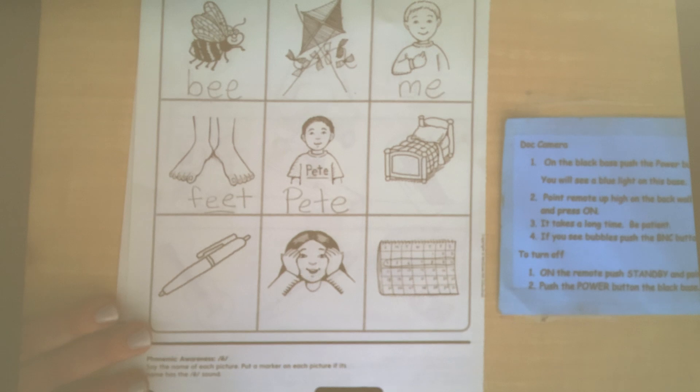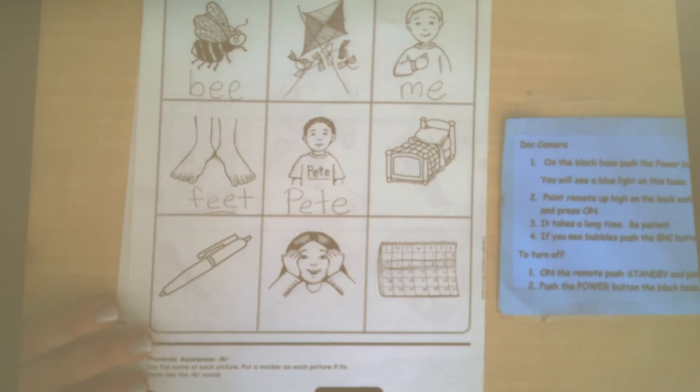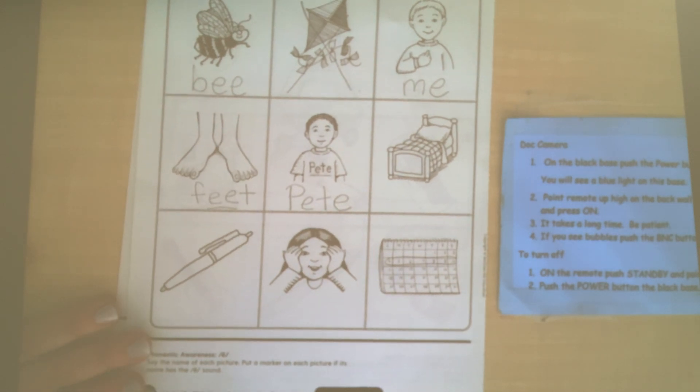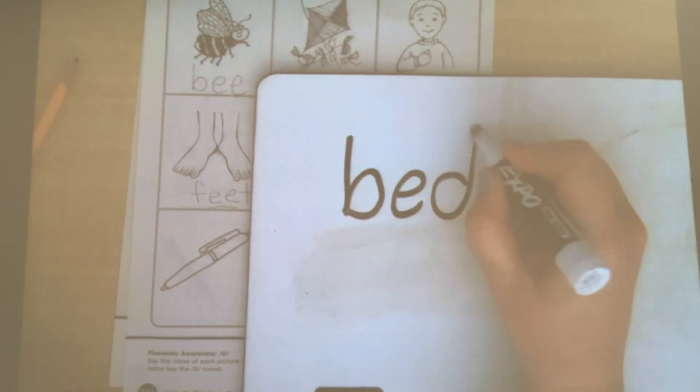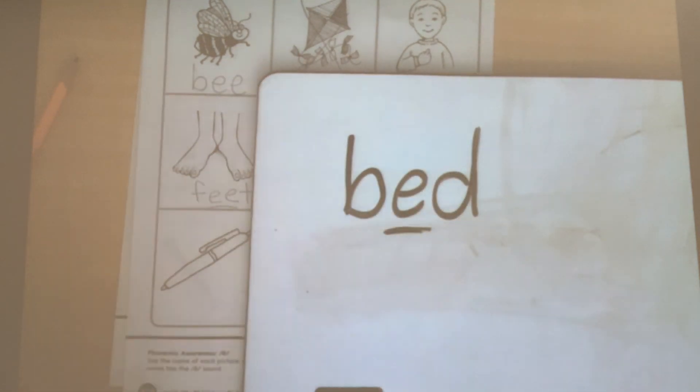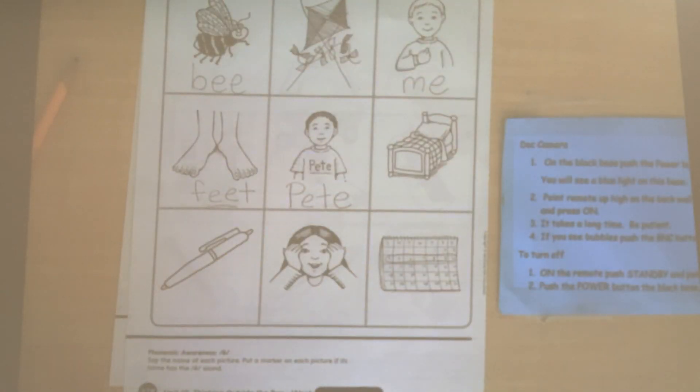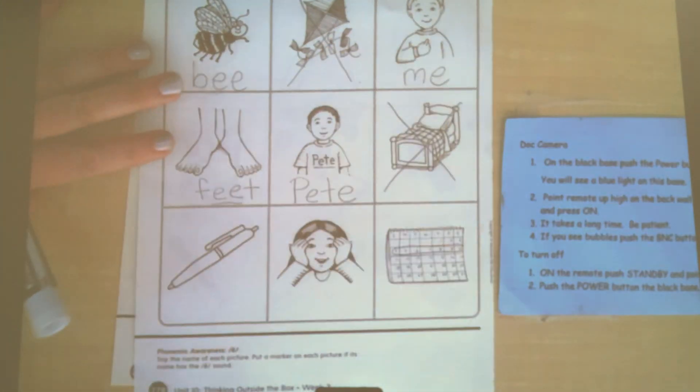Bed. Hmm, bed, B-E-D. Hold on, it has an E in it, right? B-E-D. Do you know what the difference is though? So, this E, it's not the long vowel sound, it's the E, the short vowel sound. So this one is not what we're looking for because we're only looking for the long vowel E, so it gets crossed out.